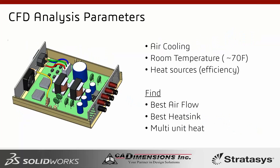For today's example, we are going to look at an electronic enclosure. The analysis parameters are as follows: heat is being dissipated from the capacitors, transformers, and chips underneath the heat sinks. It has to be air cooled — we can't use water cooling because if there's a leak it will probably burn the chip. We know this will be in room temperature, though if the ambient is higher, you need to ensure the airflow direction is correct.